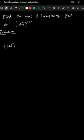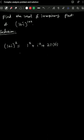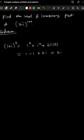First look at the square. So this is 1^2 plus i^2 plus 2(1)(i). So 1^2 is 1, i^2 is -1, plus 2i. So 1 - 1 + 2i, the answer is 2i.